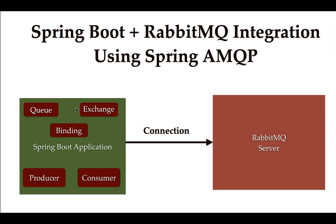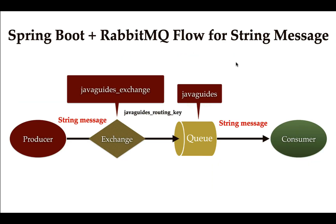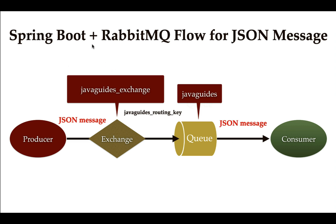Next, we will learn how to use a message of type String for communication between producer and consumer using the RabbitMQ broker in a Spring Boot application. After that, you will learn how to use a message of type JSON for communication between producer and consumer using RabbitMQ.